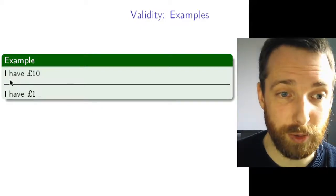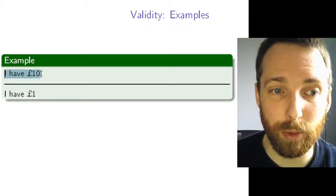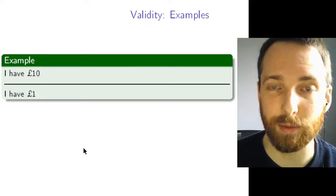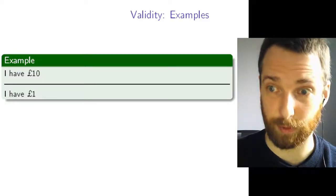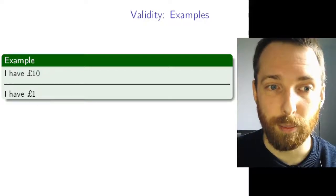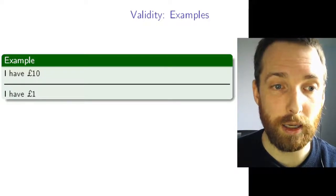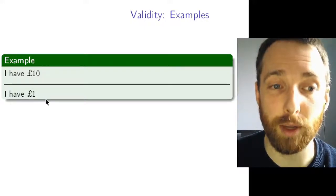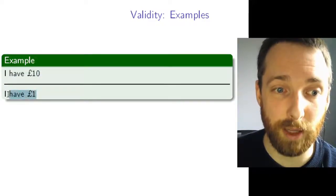Why is this argument valid? Just assume you don't know anything about how much money I have, but assume the premise is true — that I have at least 10 pounds. Well, 10 is more than one, so if I have at least 10, I have at least one. Now, as it happens, both of these sentences happen to be true of me. But the fact that these two things happen to be true isn't what makes the argument valid. It's rather the relationship between the two sentences — namely that the truth of the one guarantees the truth of the other. There's no possible bank account balance that would make the premise true but the conclusion false.